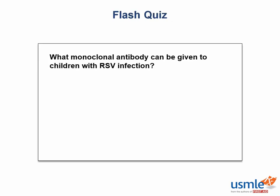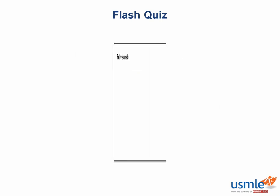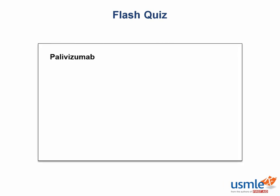Now for a quick quiz: which monoclonal antibody can be given to children with RSV infection? That would be palivizumab — the monoclonal antibody that binds to the F protein on the RSV virus, helping the immune system fight off the disease.